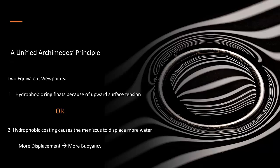So now we have a unified version of Archimedes principle which gives rise to two equivalent physical interpretations of why this super hydrophobic ring floats. You can either think of the ring as floating because the upward surface tension forces combined with the hydrostatic pressure balance its weight, or you can think of the ring as floating because the water repellent coating causes a large meniscus which displaces more water.